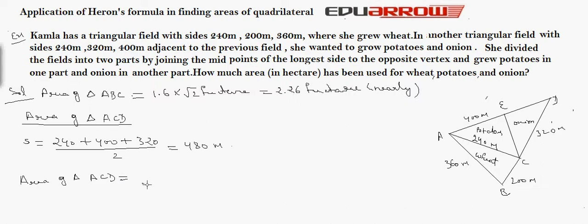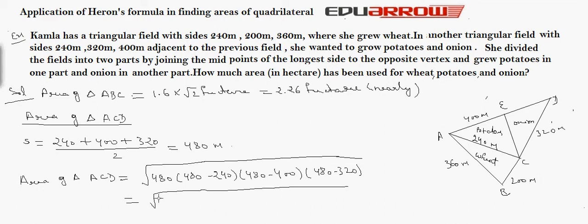Now area of triangle ACD is equal to square root of S into S minus A into S minus B into S minus C. Square root of 480 into 260 into 80 into 160.